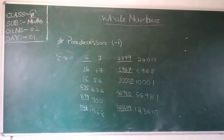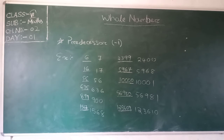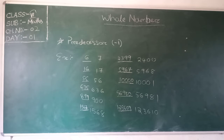Similarly, the predecessor of 10,001 is 10,000. And the predecessor of 56,981 is 56,980. Likewise, the predecessor of 123,610 is 123,609. So we can find the predecessor of any large number using this process.